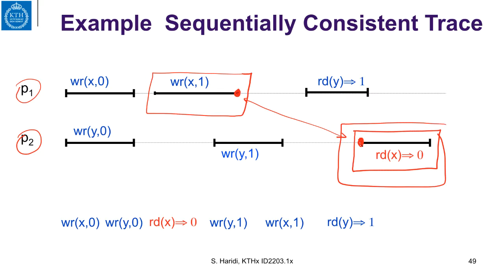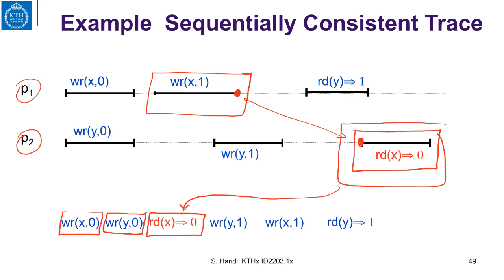What we do is place this read just before the write in a possible sequential execution. We start with X assigned value 0, then Y assigned value 0, then we put the read of X in the sequential execution, followed by the write of Y, the write of X, and the read of Y. As stated, this is not linearizable.